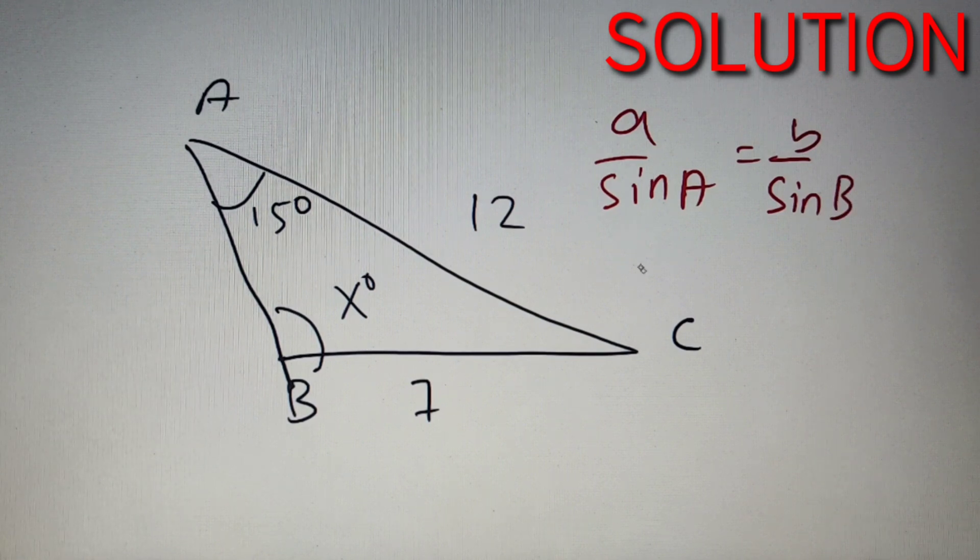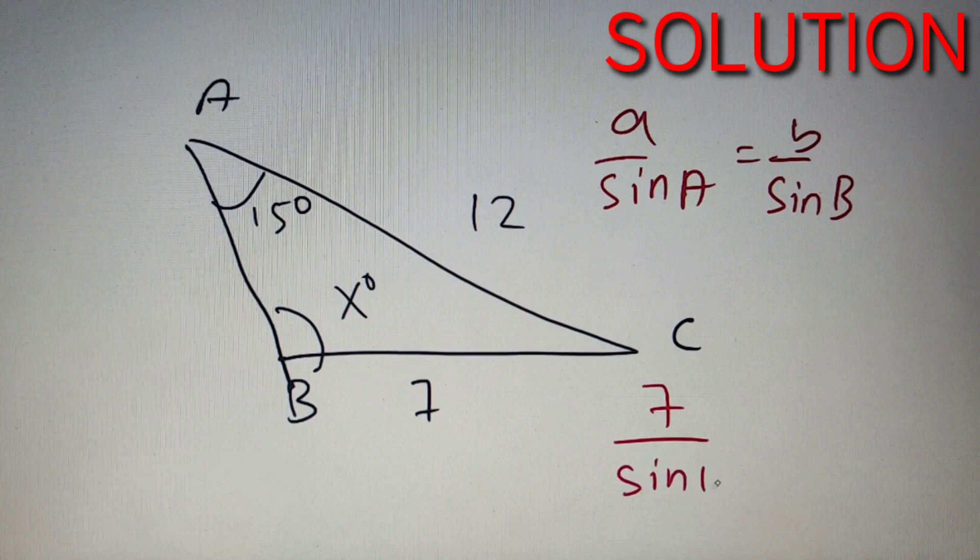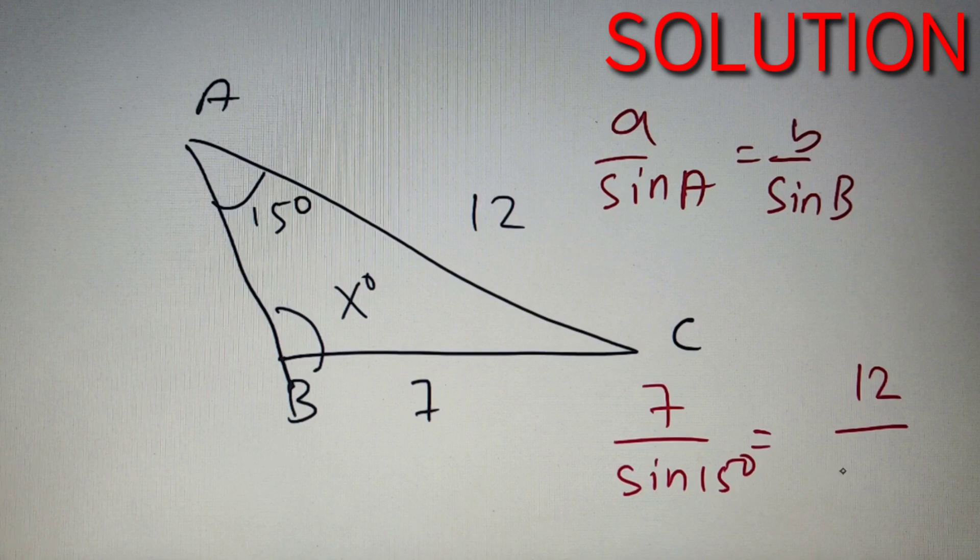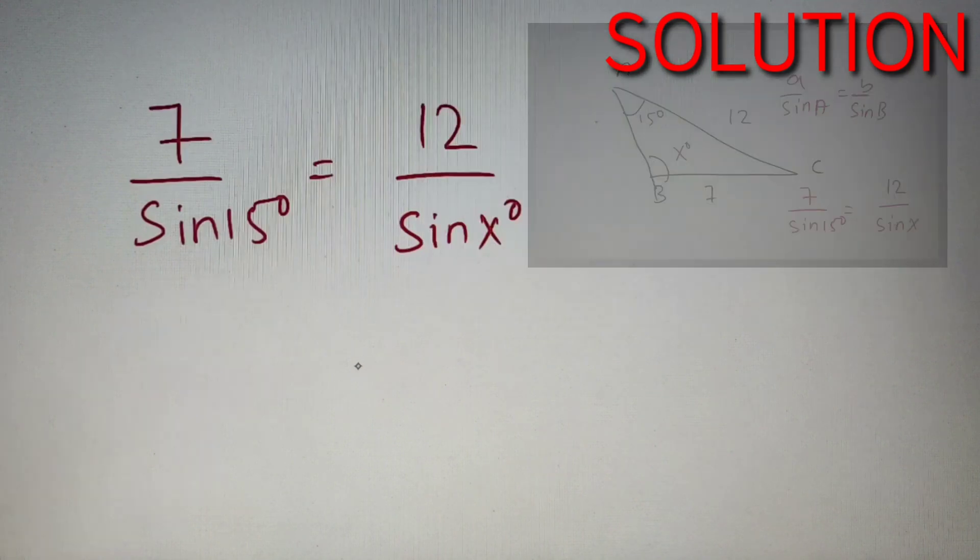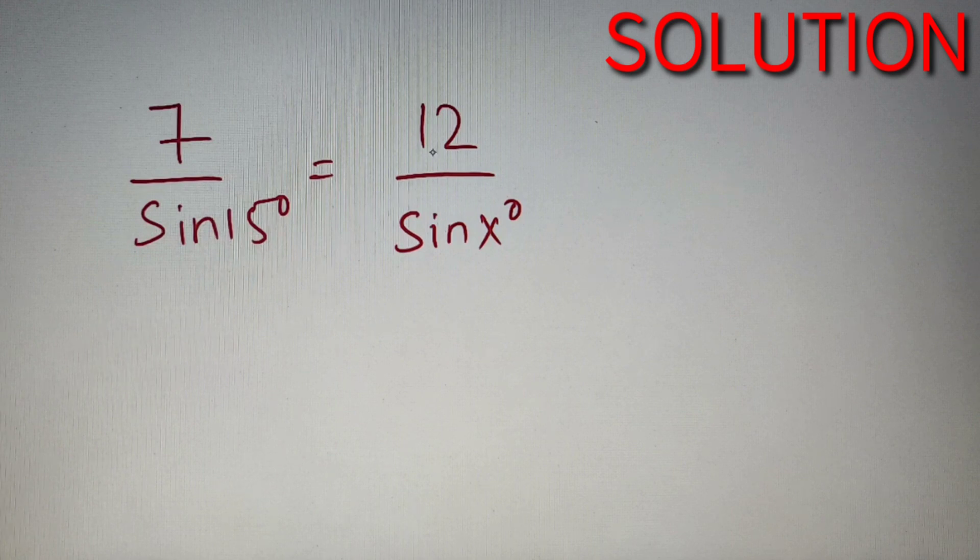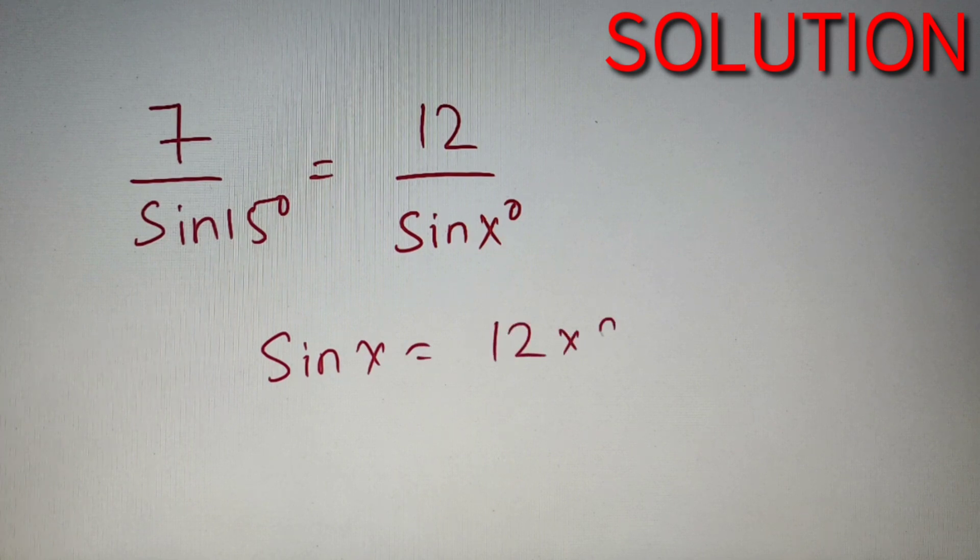In this question, the value of A is equal to 7 and the value of sine A is equal to sine 15 degrees, the value of B is equal to 12 and sine B is equal to sine X. Now in application of sine rule, we have got that 7 by sine 15 is equal to 12 by sine X degrees. So we can say that sine X is equal to 12 into sine 15 whole divided by 7.